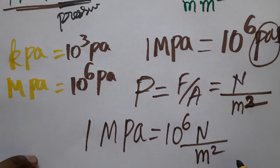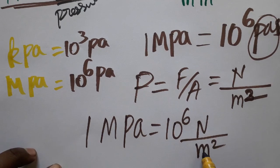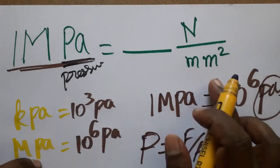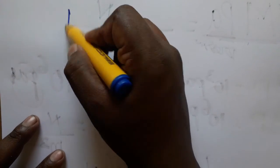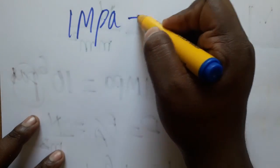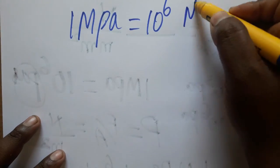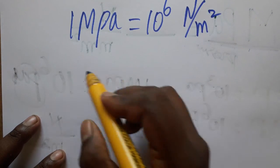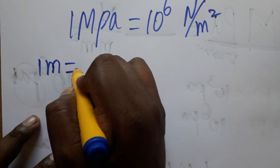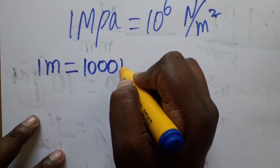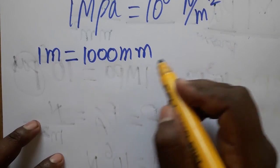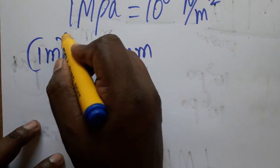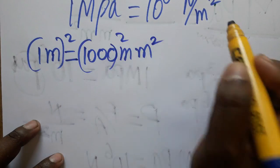The question asks for Newton per millimeter square. So now I have one mega pascal equal to 10 power 6 Newton per meter square. One meter is equal to 1000 millimeters, so one meter square equals 1000 squared millimeter square.